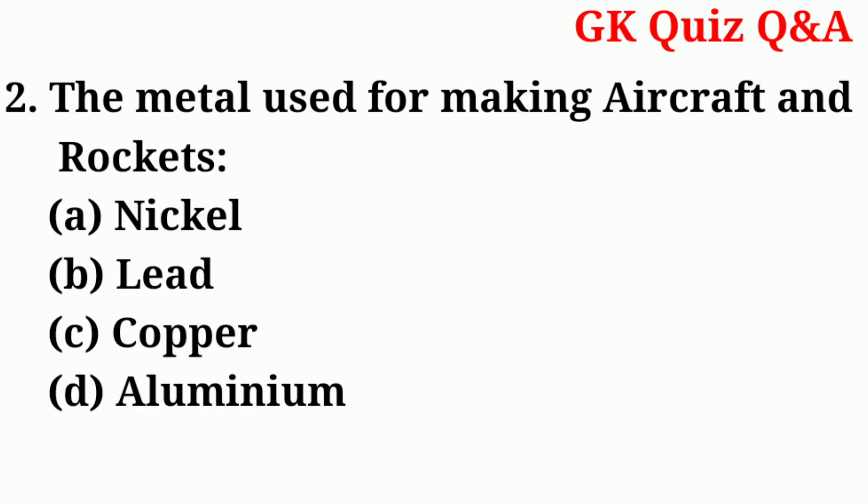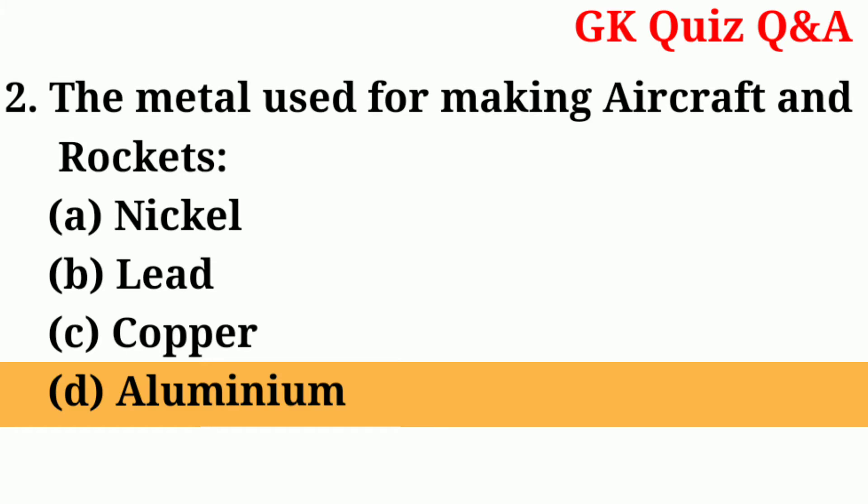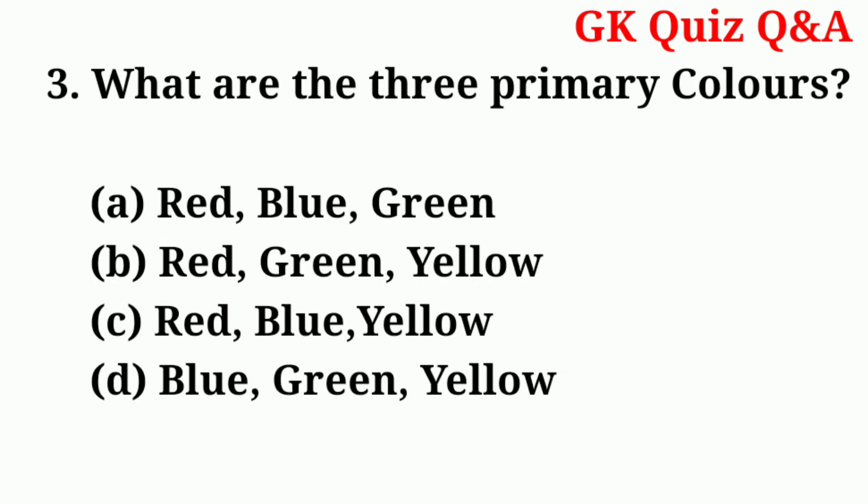Number two: the metal used for making aircraft and rockets is — answer: number D — aluminium. Number three: what are the three primary colors?